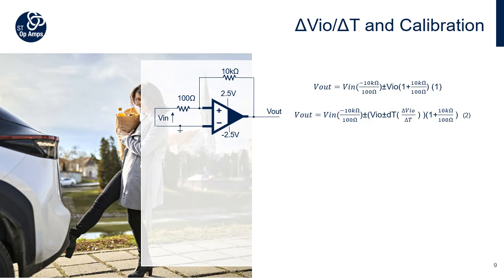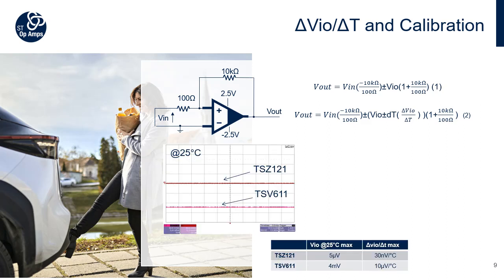This allows a fairly accurate calculation of the worst-case change in output due to VIO, neglecting the effect of the resistors. However, the resistor values also change with temperature and will also affect the gain. Typical drift values for general-purpose precision OpAmps lie in the range of 1 to 10 µV per degree Celsius. In this schematic, Vin equals 0 as the inputs are grounded, so the output of the OpAmp reveals VIO multiplied by minus 101.